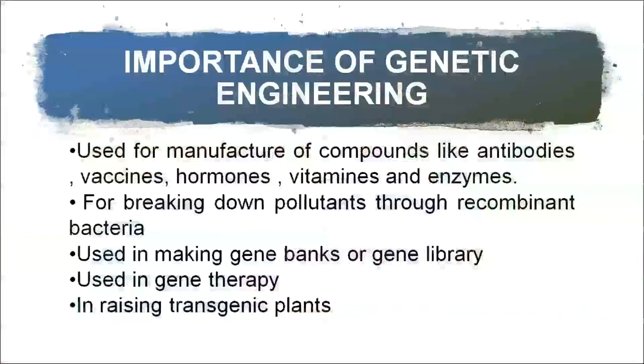Genetic engineering is used for the manufacture of compounds like antibodies, vaccines, hormones, vitamins, and enzymes. Many times a patient is suffering from a disease and is not able to produce enough antibodies, so the antibodies can be produced artificially in bioreactors and administered to the patient. Vaccines are the attenuated organisms which cause the disease; once given to a person they create immunity in the body. Hormones, vitamins, and enzymes are also produced using genetic engineering.